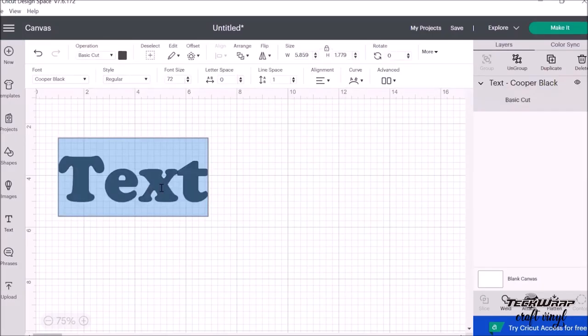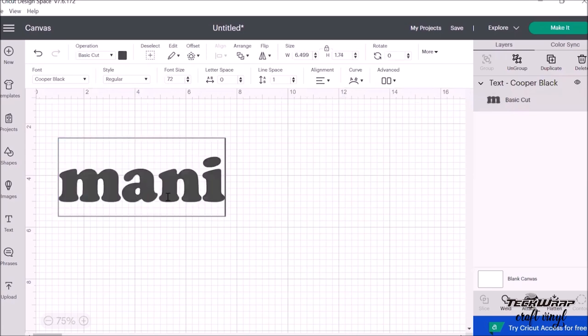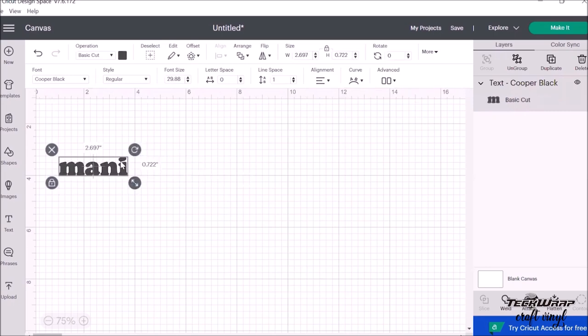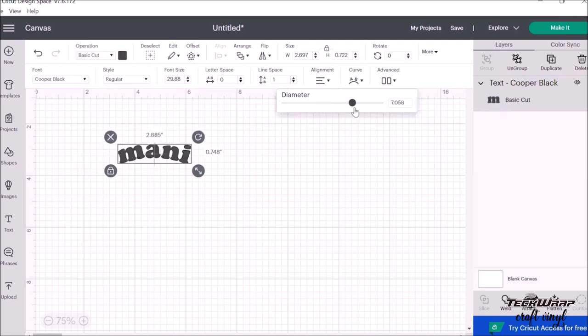Then I open my design space and click the Add Text button. Then I'm typing the word that I want for my design. I'll be using the word manifest. Since I want to achieve a wavy text, I'll click the Curve button and play around with the text diameter as well as the letter spacing.